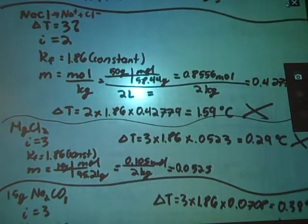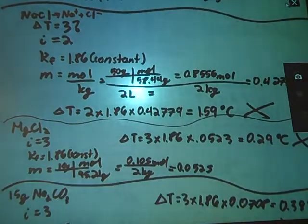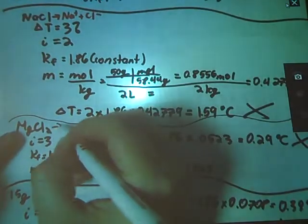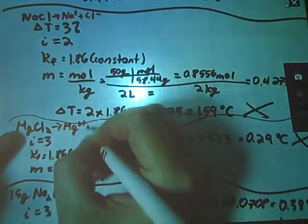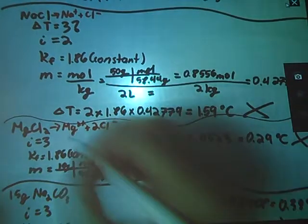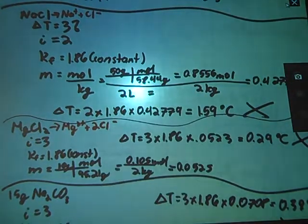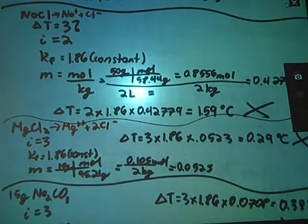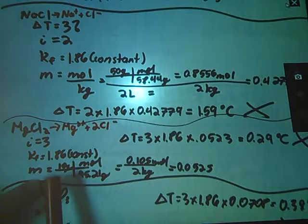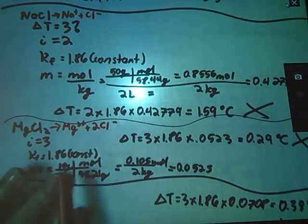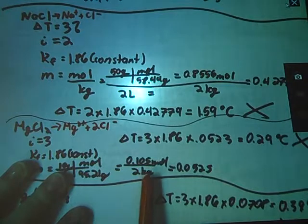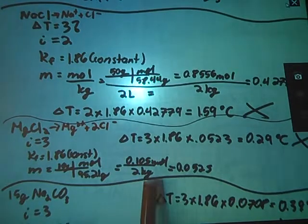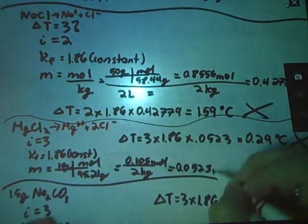Our next substance was 10 grams of magnesium chloride. So, once again, my Hoff factor, this time when I put it in solution, I'm going to end up with 1 magnesium ion and 2 chloride ions for a grand total of 3 ions. Once again, I have that freezing point constant since we're still dissolving it in water, and we calculate the molality the same way. Convert our mass in grams to moles divided by our 2 kilogram volume gives us our molality.